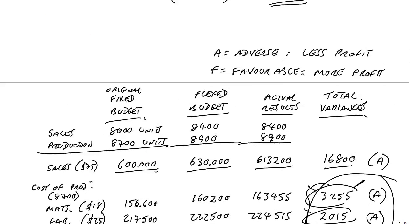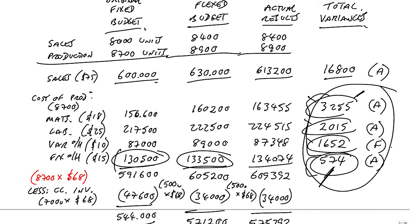What else? Well, of course, sales. We should have sold our 8,400 units at $75 a unit, but we obviously sold them at a lower price, and that lost us money. So we know we gained 2,800 from selling more, and we know we lost 16,800 by having a lower selling price. You could be asked to calculate those variances independently without having done a full flexed budget. The two sales variances you could be asked for independently.